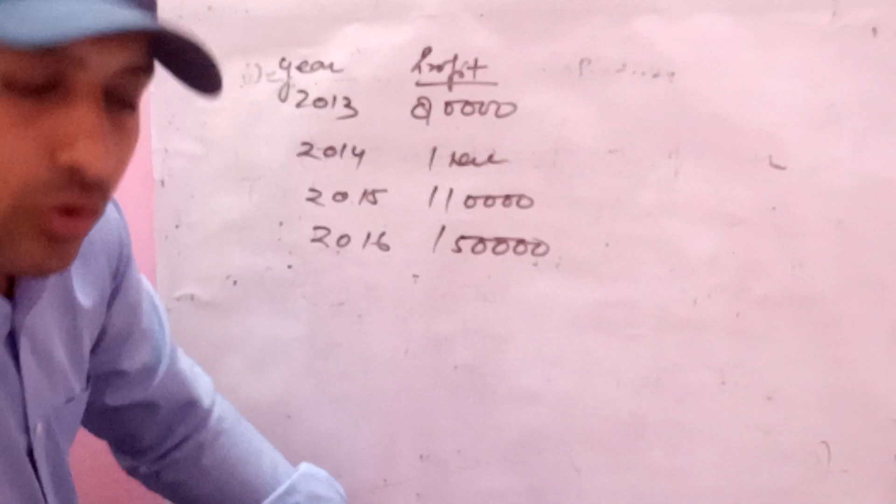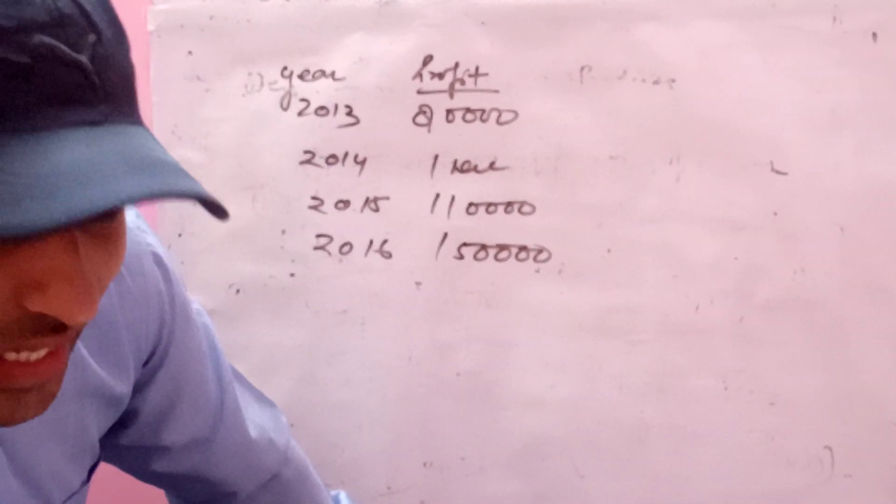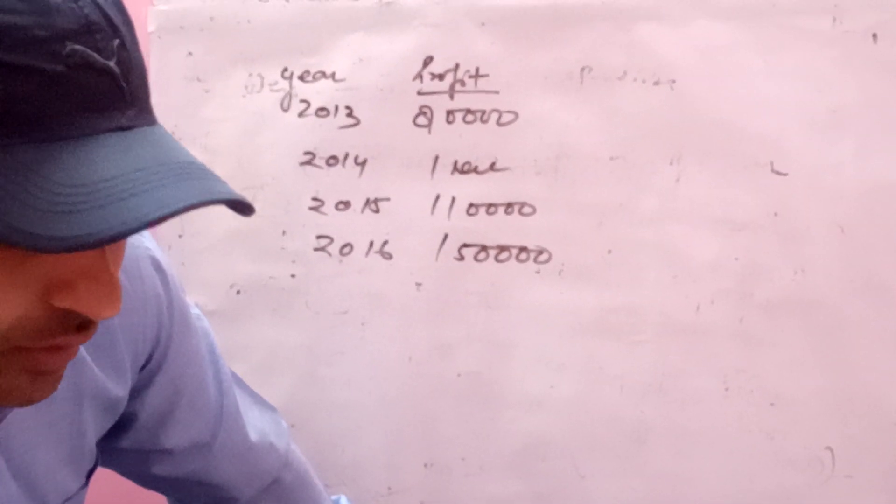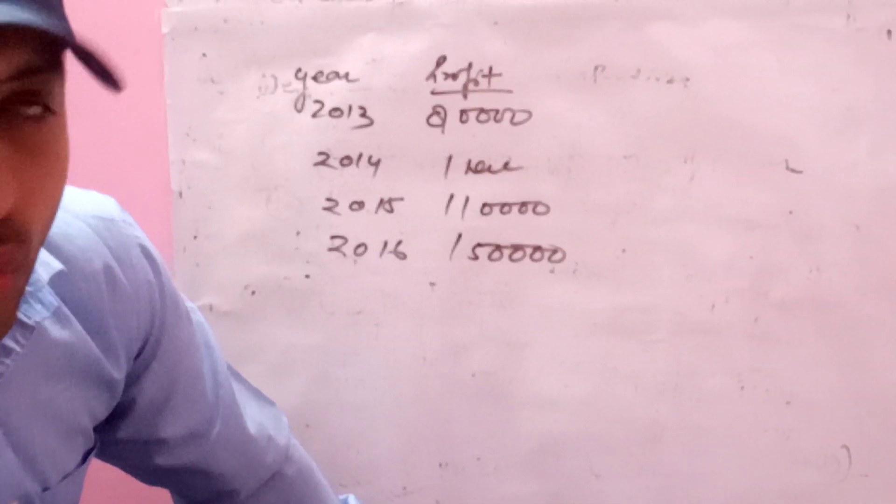Calculate the value of the goodwill on the basis of 3 years purchase of weighted average profit. Weights to be used are 1, 2, 3, 4.